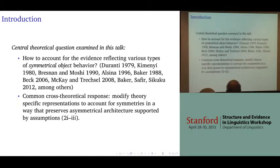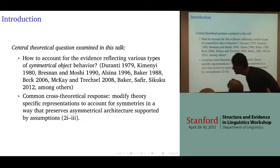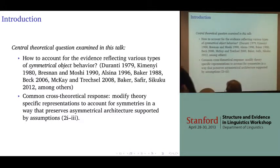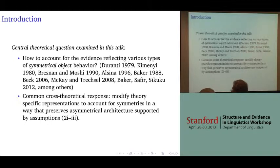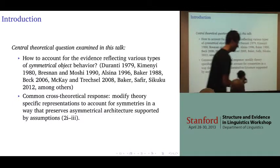The theoretical question we're going to be talking about is how to account for evidence reflecting various types of symmetrical object behaviors. There's been lots and lots of research on symmetrical and asymmetrical objects, a lot of it in the LFG literature and a lot of it in the GB principles and parameters literature, and among others as well.